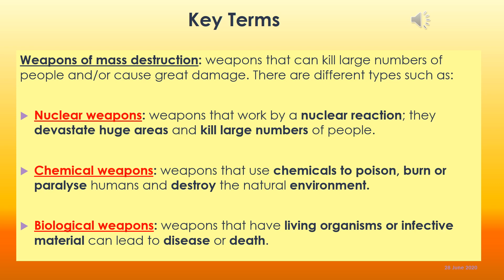Nuclear weapons are weapons that work by a nuclear reaction — you saw the evidence of that in that first video. They devastate huge areas, kill large numbers of people, and cause damage for many years after the actual use. Chemical weapons use chemicals to poison, burn, or paralyze humans and destroy the natural environment — examples include chlorine gas used in World War One and Zyklon B gas used in Nazi concentration camps. Biological weapons have living organisms or infective material that can lead to disease or death. In World War One, anthrax — an infection that affects the skin and lungs with blisters — was used as a biological weapon.